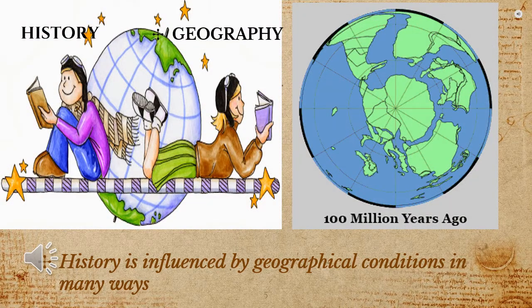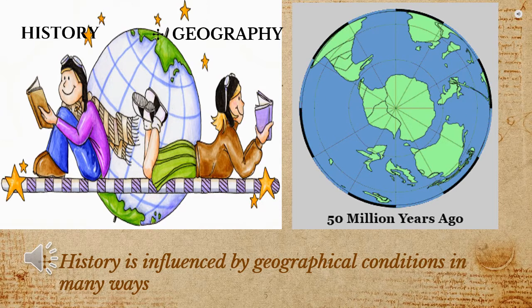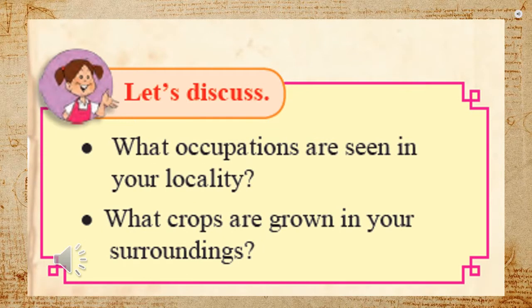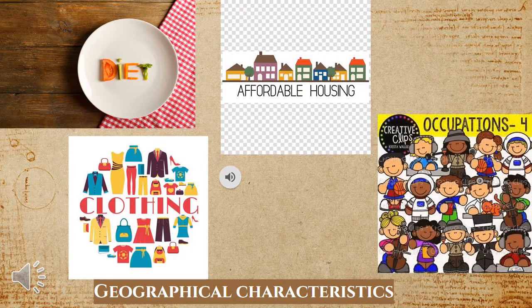History and geography are inseparable. History is influenced by geographical conditions in many ways. Let's do a small exercise — observe your surroundings and come up with answers for the following questions. Our diet, clothing, housing, occupations — in fact all human life in any region depends to a large extent on its geographical characteristics.